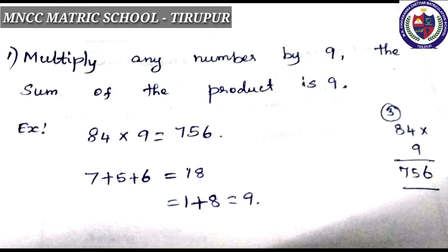Multiply any number by 9 — the sum of the digits of the product is always 9. Example: 84 × 9 = 756. Add the digits: 7 + 5 + 6 = 18. Add again: 1 + 8 = 9.